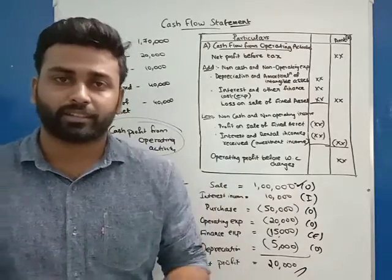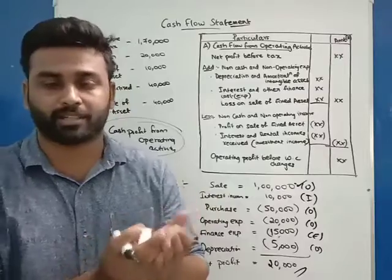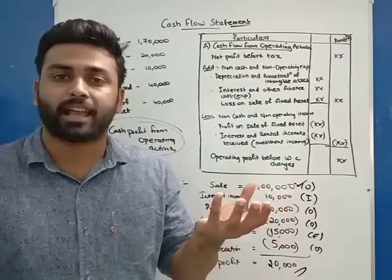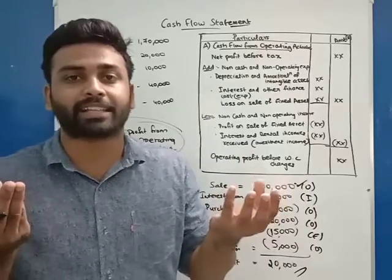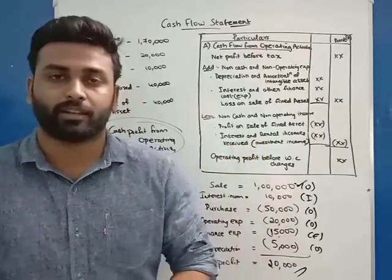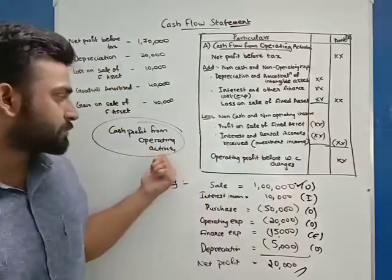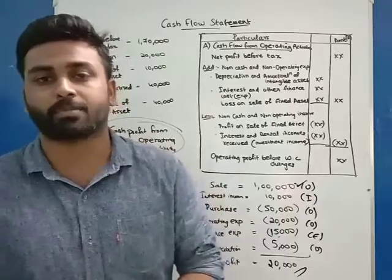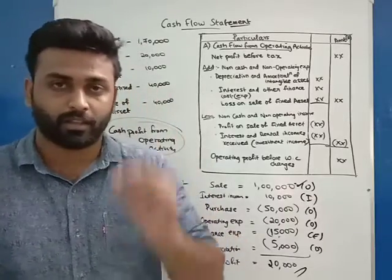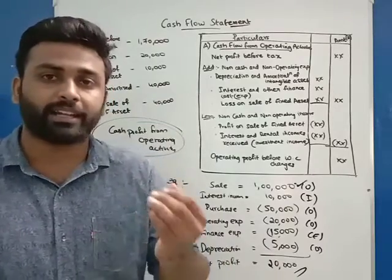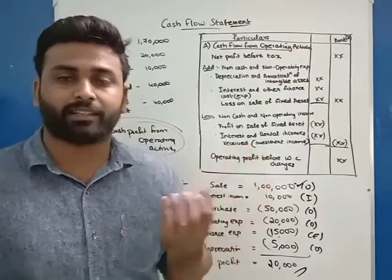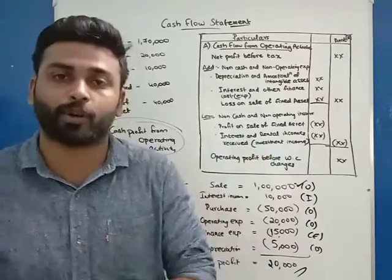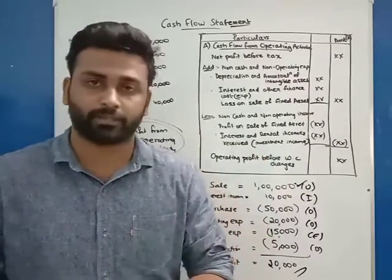Some may think that this 20,000 is the remaining cash from the business — but no, it may not be the same. The net profit of the business and the cash from operating activity will be different. So we have to find the cash profit from operating activity. There are two methods. The first method is to take all operating cash inflows and subtract operating cash outflows to get the net cash profit.